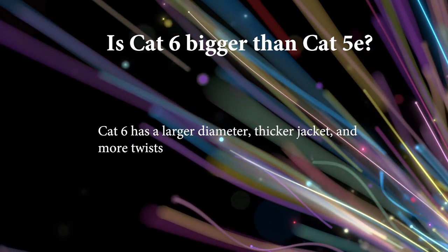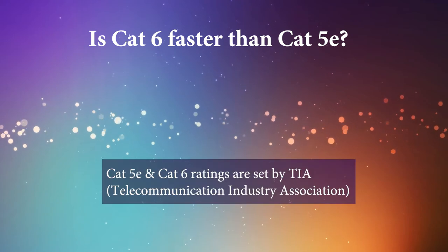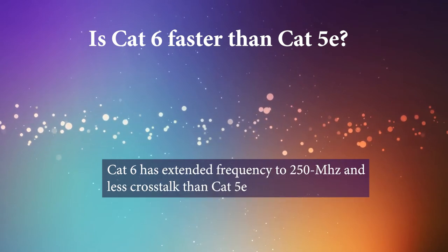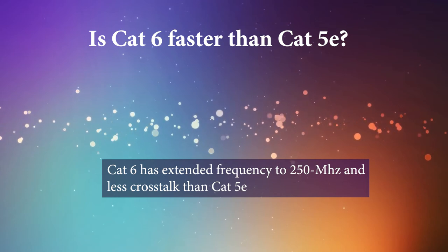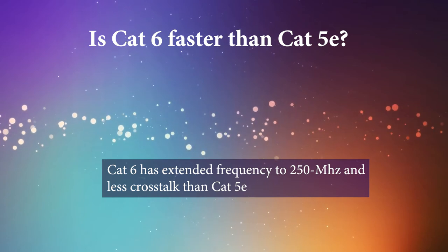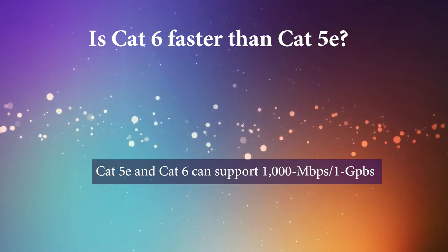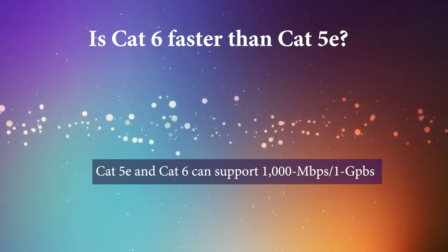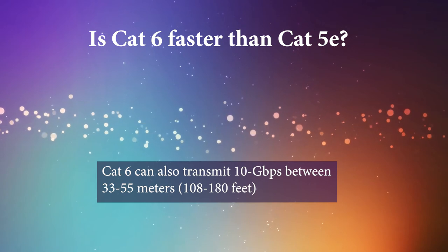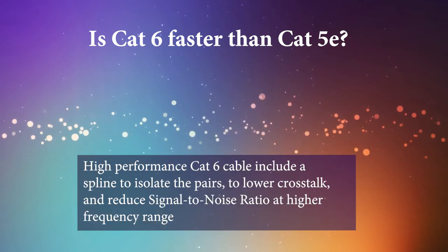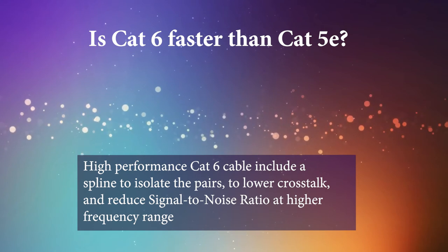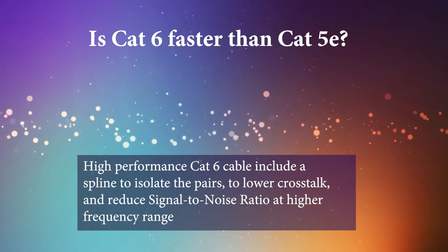The amount of twists per centimeter varies by cable manufacturer. The ratings for Cat 5E and Cat 6 are set by TIA, the Telecommunication Industry Association. The Category 6 specification improves upon the Category 5E 100 megahertz specification by extending frequency response and further reducing crosstalk. The improved performance of Cat 6 provides 250 megahertz of bandwidth. Both cables can support 1 gigabit per second for distances up to 100 meters or 328 feet, though Cat 6 can also reach data transfer speeds of 10 gigabits per second between 33 to 55 meters. Most premium, high-performance Cat 6 cables are constructed with a center spline to isolate each pair, providing lower crosstalk and reduced signal-to-noise ratio, especially at higher frequency ranges.